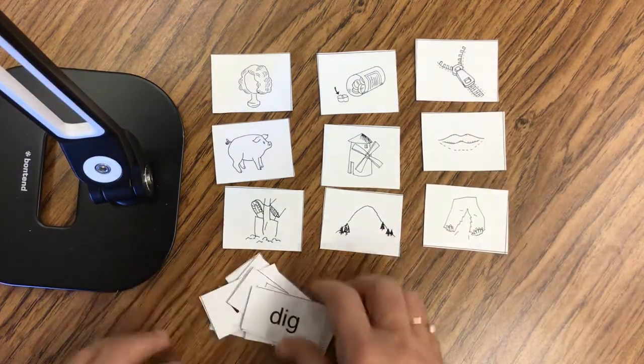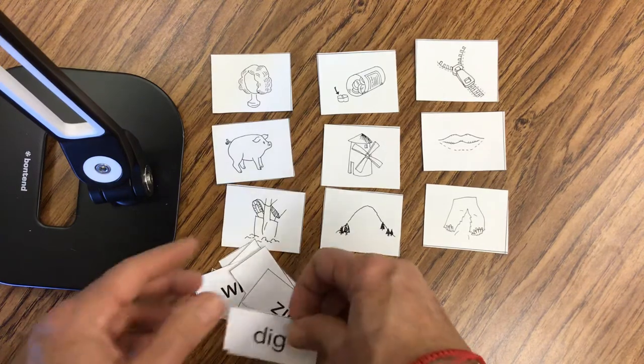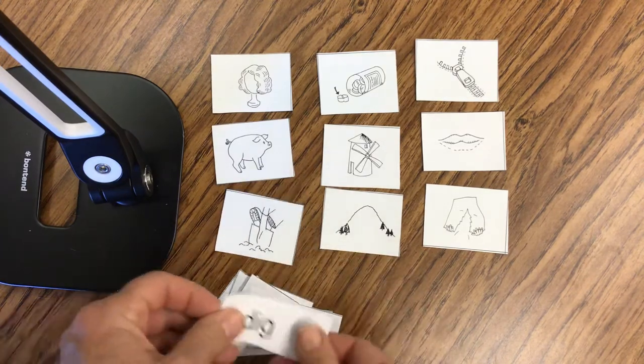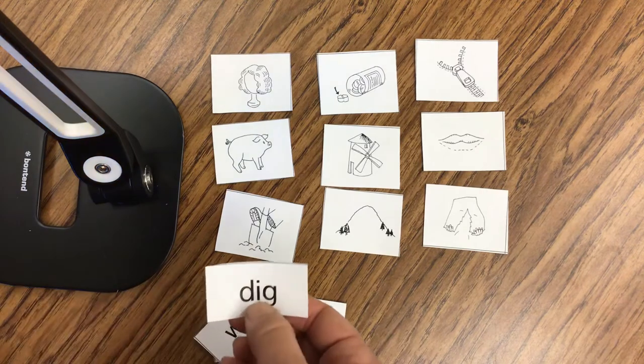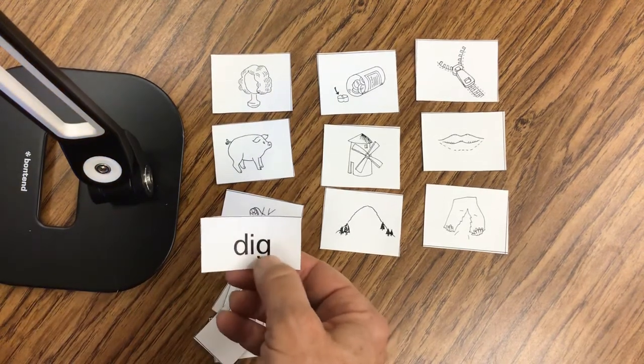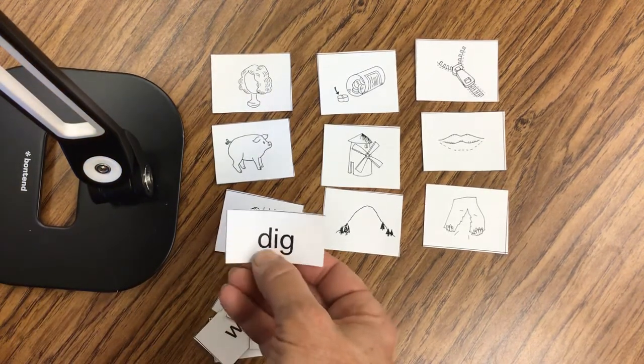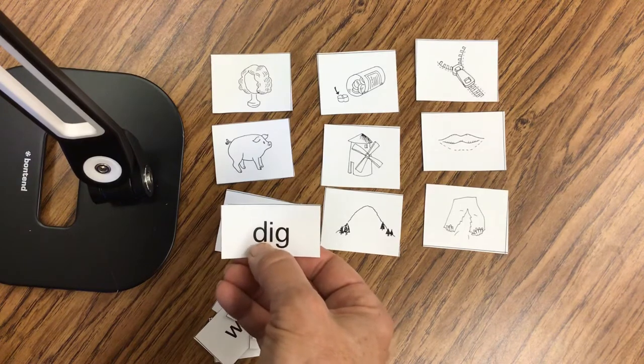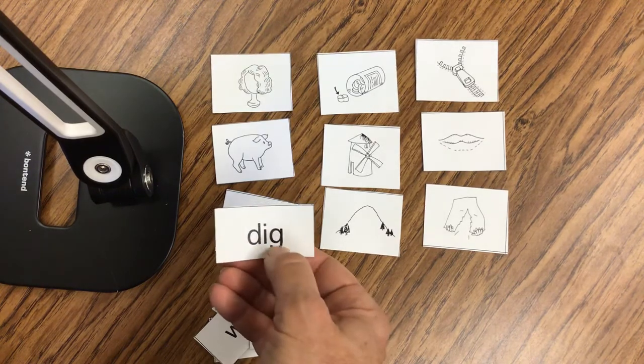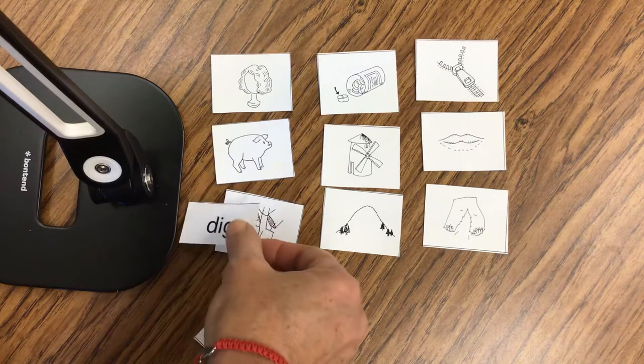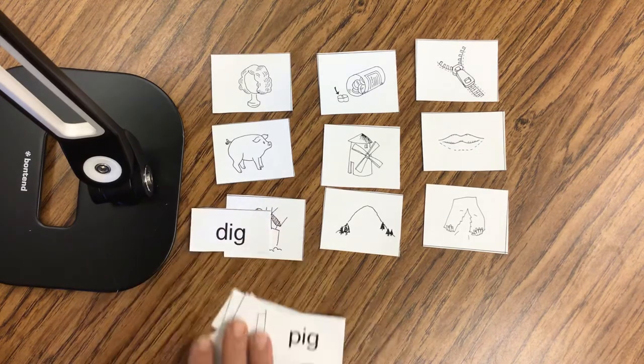Now I'm going to take my words. And I can take the top one. And I'm going to look at that first sound now, too, to help me. So this is the ig, ig. It ends in that g. But now I need to look at that first letter. D. D, ig. Dig. Here's the dig picture. So I can put it right with there.